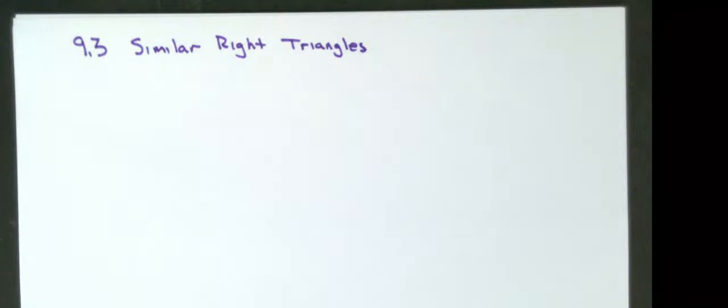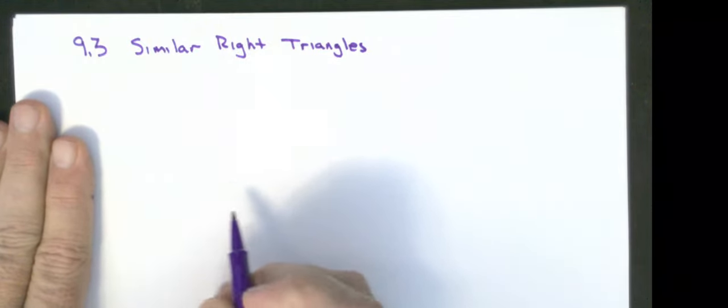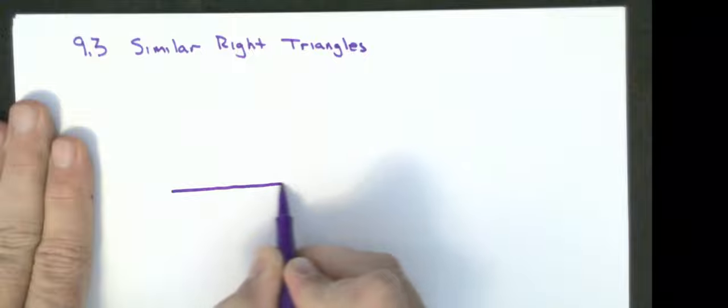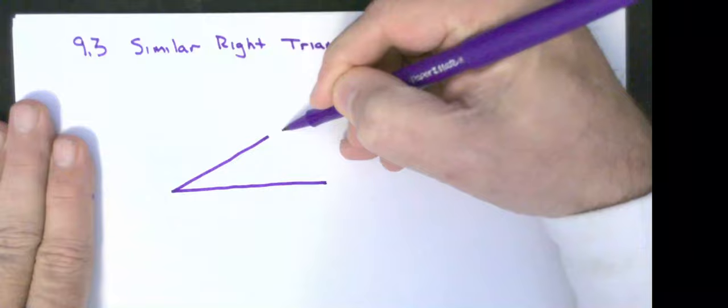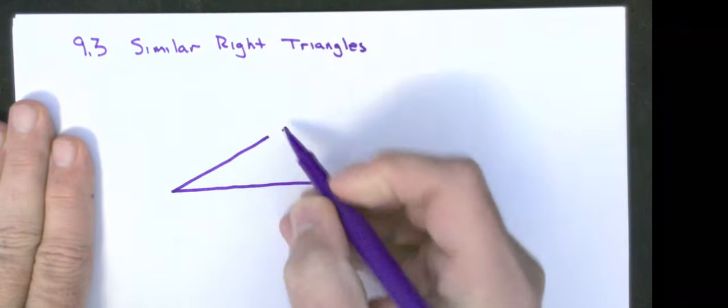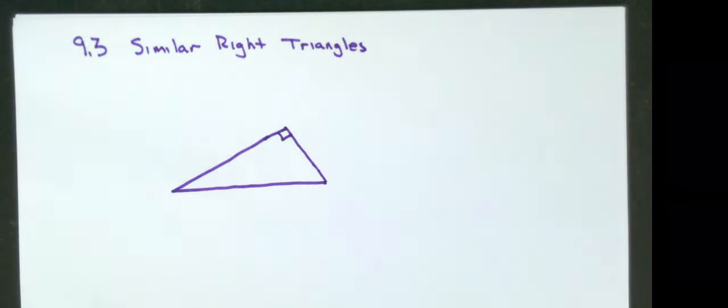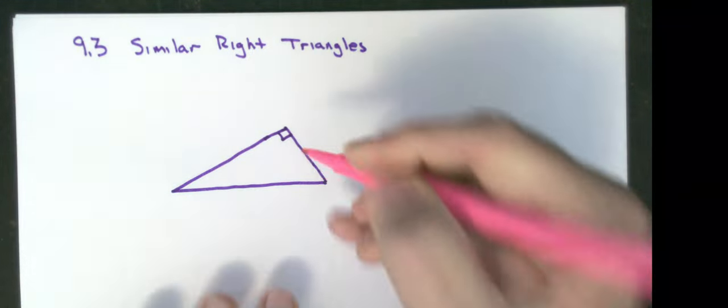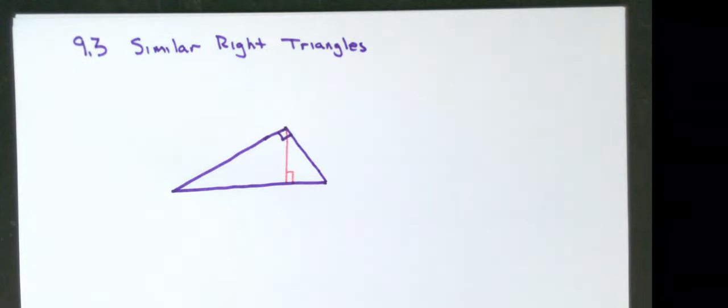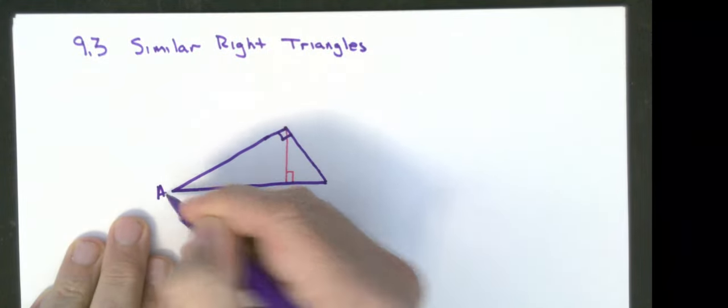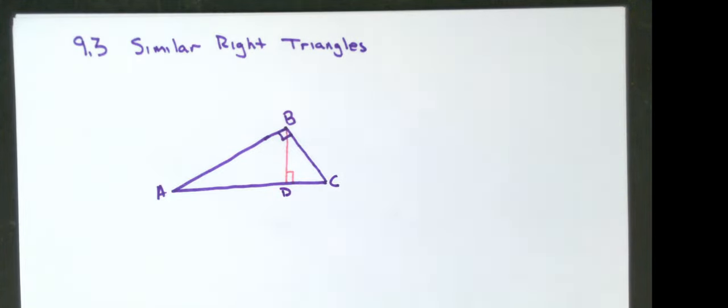Our next section, 9.3, talks about similarity in right triangles. So if I take a right triangle, any right triangle, I'm going to make this a right triangle, and I drop an altitude to that right triangle. I'm going to label some points here. I end up with three different triangles.